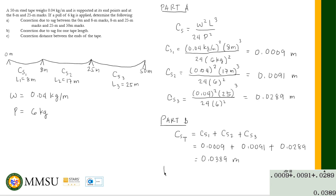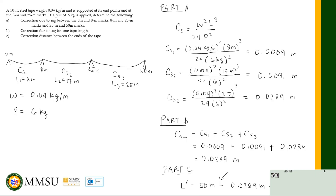For part C, we solve for the corrected length or distance between the ends of the tape. L' = nominal (measured) length − total correction = 50 meters − 0.0389 meters = 49.9611 meters. Remember, we always subtract the sag correction. So the corrected distance is 49.9611 meters.